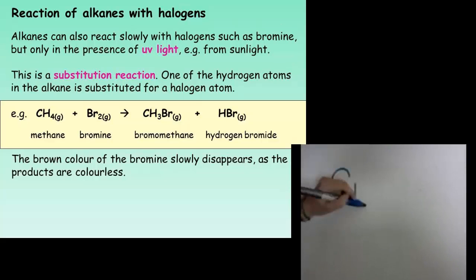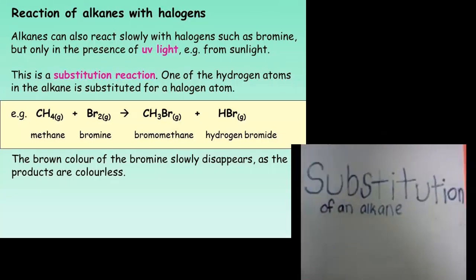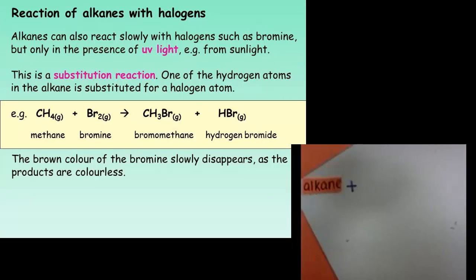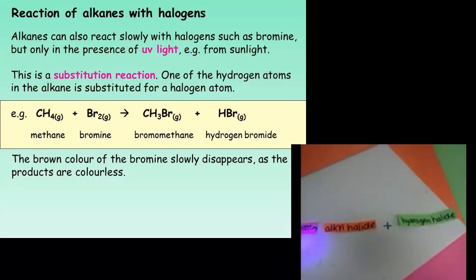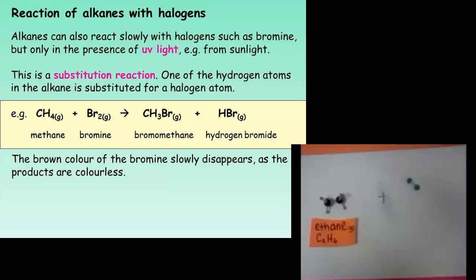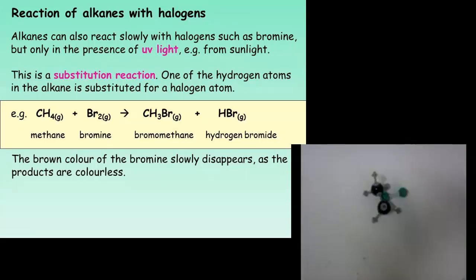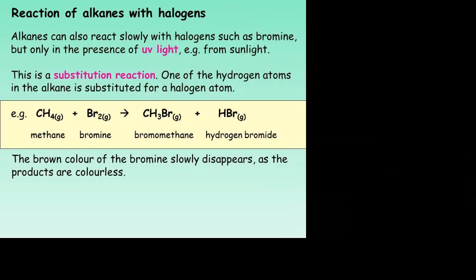Another interesting reaction of alkanes involves another halogen, this time bromine gas. So if we take an alkane, for example methane, and we put it with bromine gas, and we shine UV light or sunlight onto the mixture, we will have a chemical reaction taking place. This is a substitution reaction. One of the hydrogen atoms on the alkane is substituted for a halogen atom, in this case bromine. We form two products here, bromomethane and hydrogen bromide. This reaction can be repeated with another halogen, for example chlorine. In this case we would form chloromethane and hydrogen chloride.